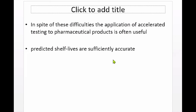A student asks whether only humidity and light intensity are analyzed in factorial analysis, or whether temperature can also be included. The lecturer clarifies that in factorial analysis, we consider factors not covered by the Arrhenius equation. Since temperature is already covered by the Arrhenius equation, factorial analysis is reserved for other factors such as humidity and light — though other factors beyond these two could also be considered.